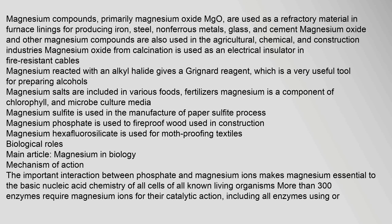Magnesium compounds, primarily magnesium oxide (MgO), are used as a refractory material in furnace linings for producing iron, steel, non-ferrous metals, glass, and cement. Magnesium oxide and other magnesium compounds are also used in the agricultural, chemical, and construction industries. Magnesium oxide from calcination is used as an electrical insulator in fire-resistant cables. Magnesium reacted with an alkyl halide gives a Grignard reagent, which is a very useful tool for preparing alcohols. Magnesium salts are included in various foods, fertilizers, and microbe culture media. Magnesium is a component of chlorophyll. Magnesium sulfite is used in the manufacture of paper (sulfite process). Magnesium phosphate is used to fireproof wood used in construction. Magnesium hexafluorosilicate is used for moth-proofing textiles.